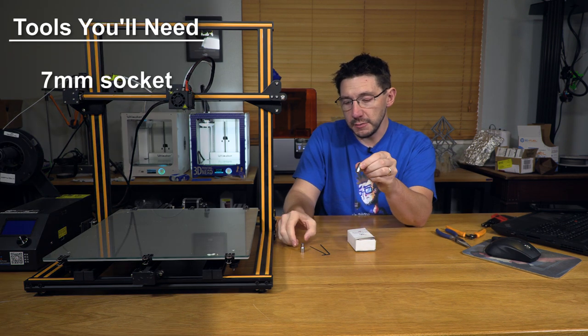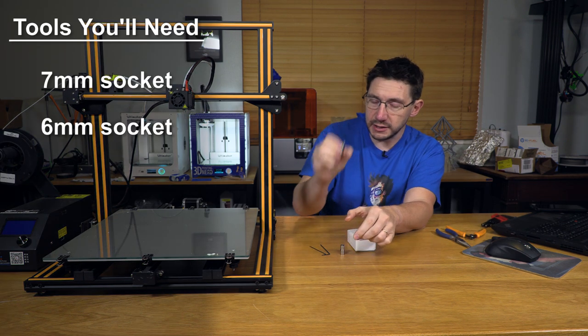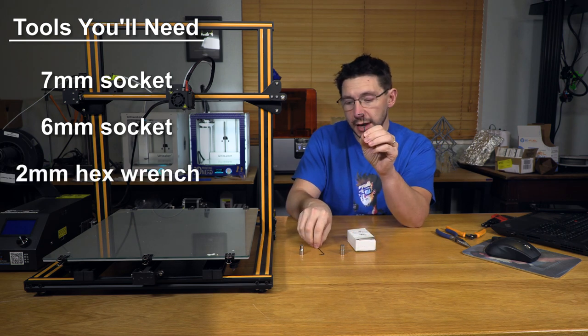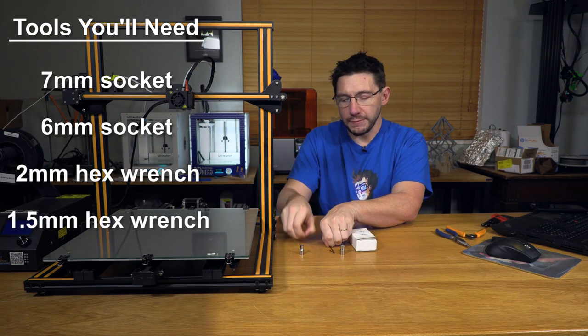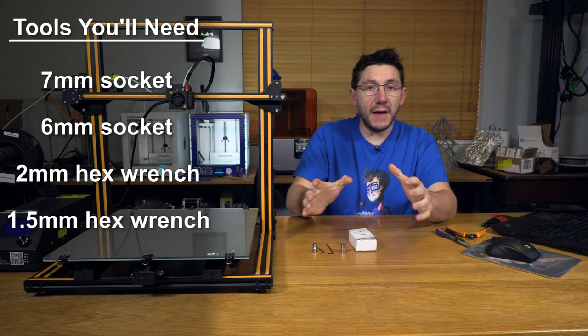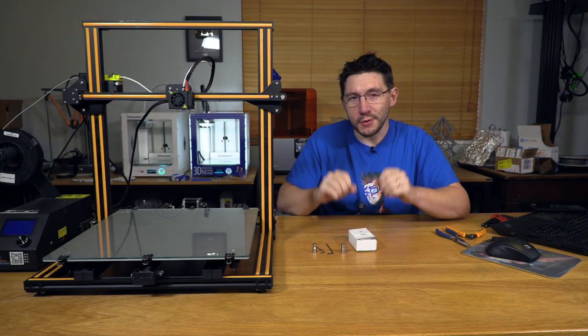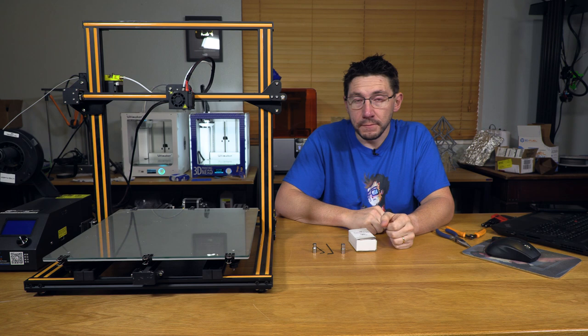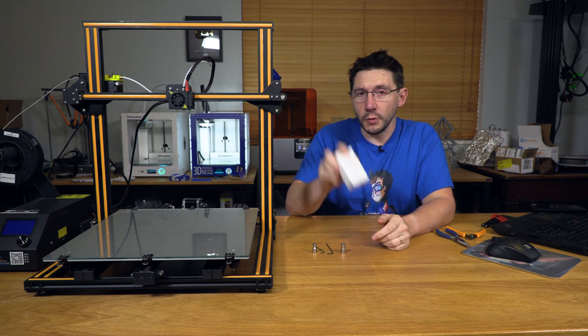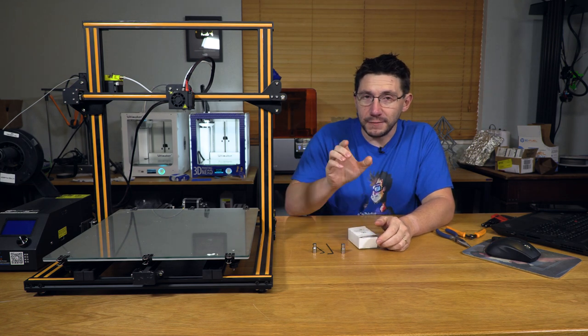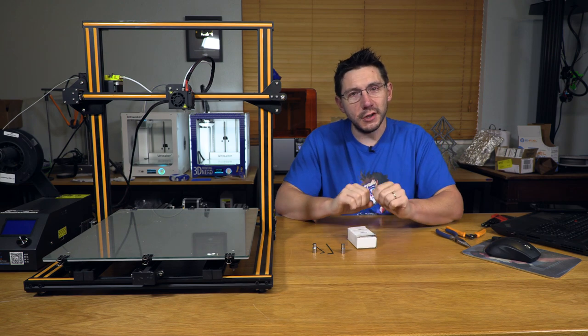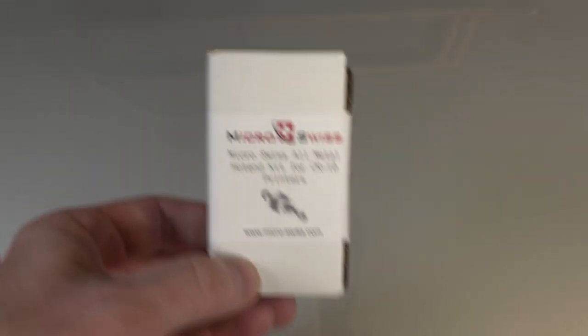You need a 7mm socket, you need a 6mm socket, you need a 2mm hex wrench, and you need a 1.5mm hex wrench. In fact, with those four tools, you're pretty much set and good to go. Why don't you grab your tools, go get your all-metal hotend upgrade kit and follow along because I'm about to show you how it goes.